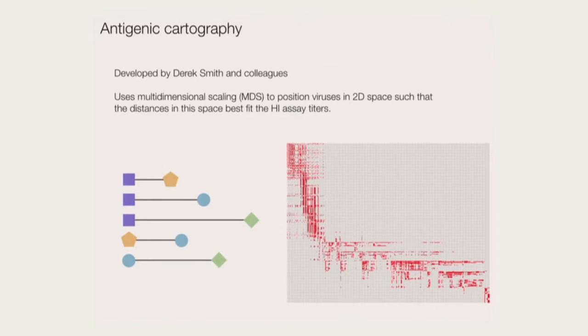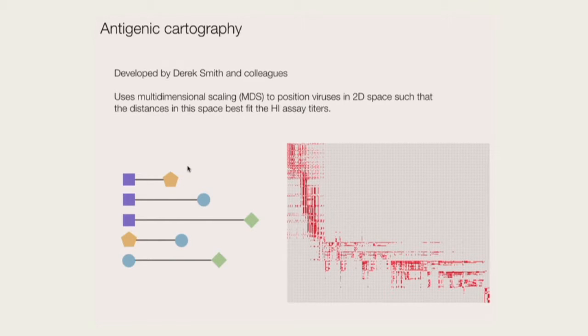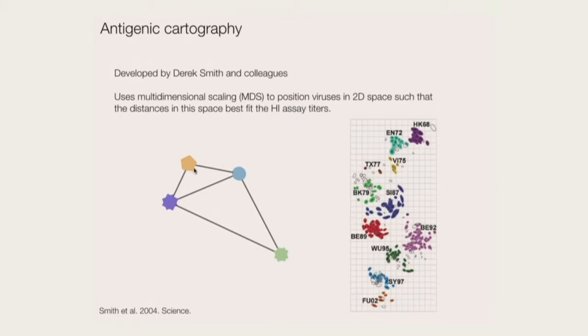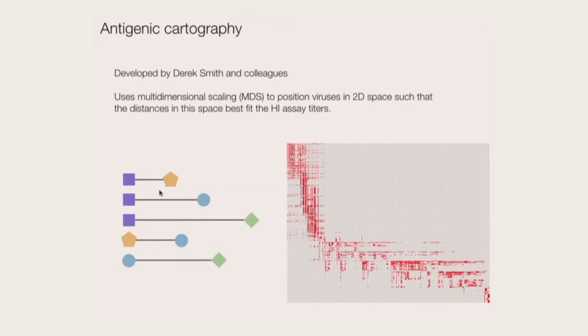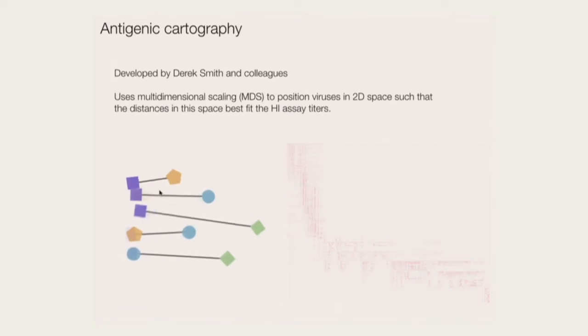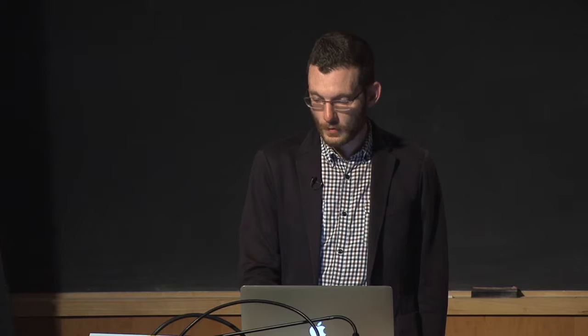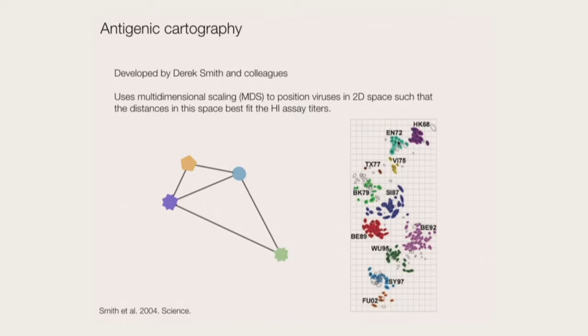This is where antigenic cartography comes in. The idea is that you have pairs of distances — say purple versus orange and purple versus blue — and you know how far apart they are. Then you can put things on a map and orient them so that the pairwise distances are recapitulated. When this is done with flu HI data, there was a really nice result in 2004: you see this clustered or punctuated evolution where there's a cluster of viruses similar to each other from around 1968, then an evolutionary jump to a set of viruses circulating in 1972, and on to 1975 and so forth.